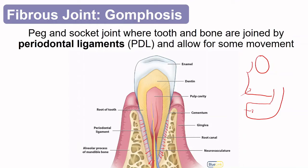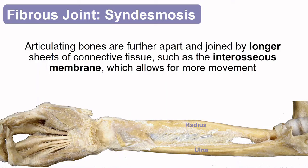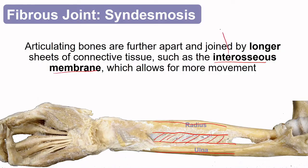Our last type of fibrous joint, a syndesmosis, is the most mobile of these fibrous joints. The bones aren't close together — we can see the edges of the radius and the ulna with significant space in between. This space is filled with what's called an interosseous membrane, meaning 'between bone.' We find interosseous membranes between the bones of our forearm and also between the bones of our legs. In the forearm, we get a lot of mobility — flipping your palms toward the floor and back up toward the ceiling is a movement through this joint.